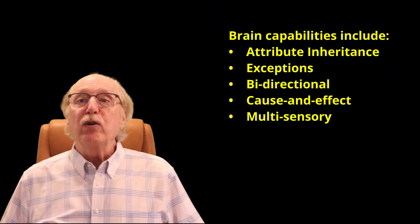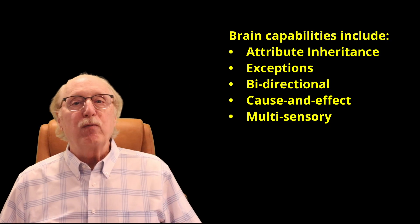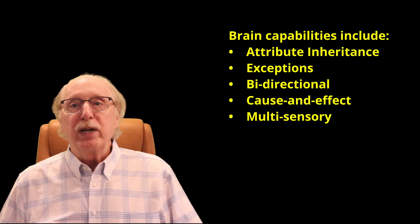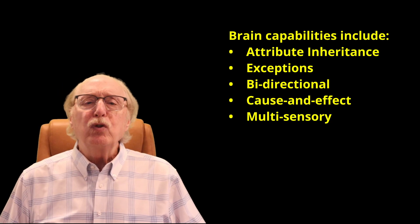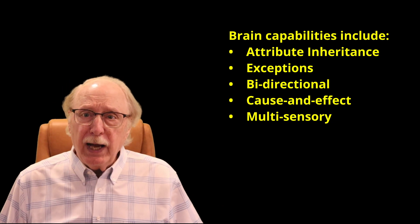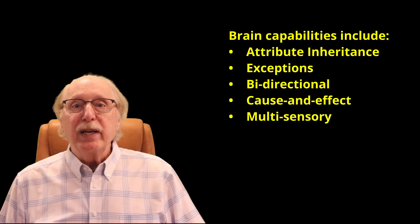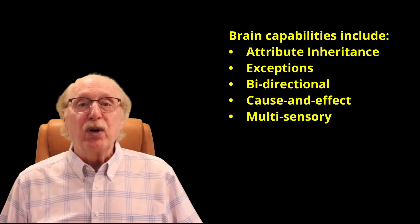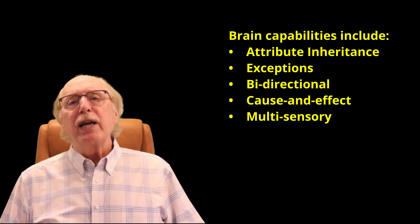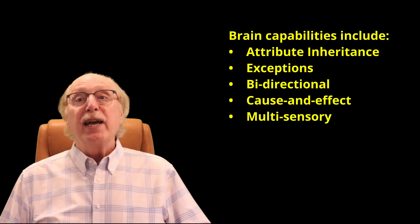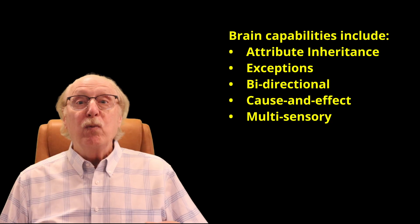I call this ability attribute inheritance, which is one key to the way your mind generalizes to create rules which greatly reduce the amount of knowledge we need to store in our brains. But these rules require exceptions — penguins are birds, but penguins don't fly. And by directionality, you can ask what is FIDO, and you can ask name some dogs. Unlike lists or databases, graphs naturally handle cause and effect reasoning and unify perception with multiple senses.